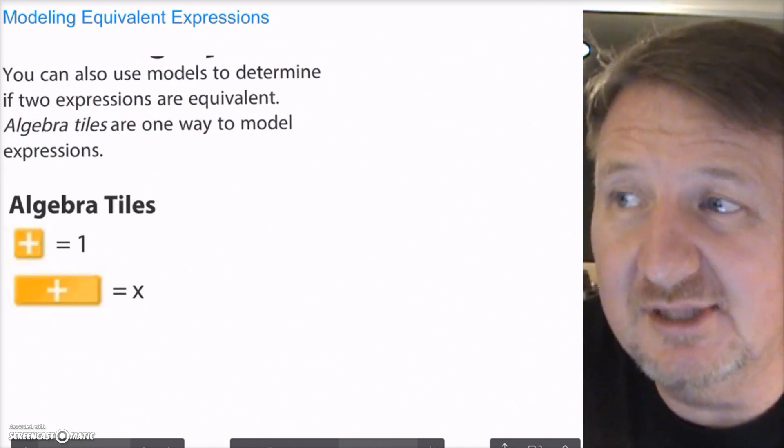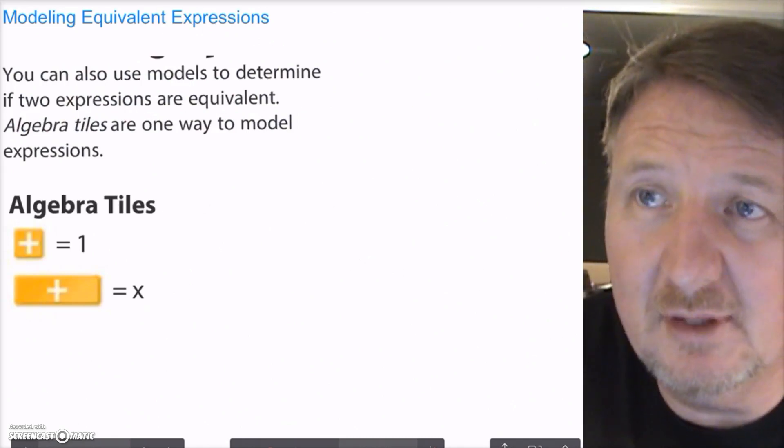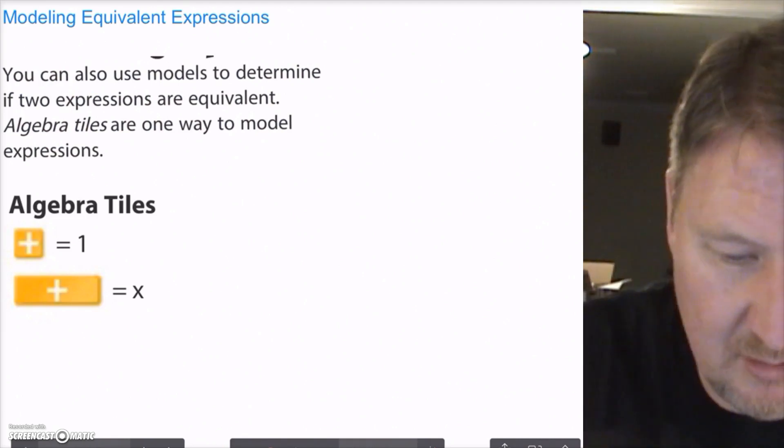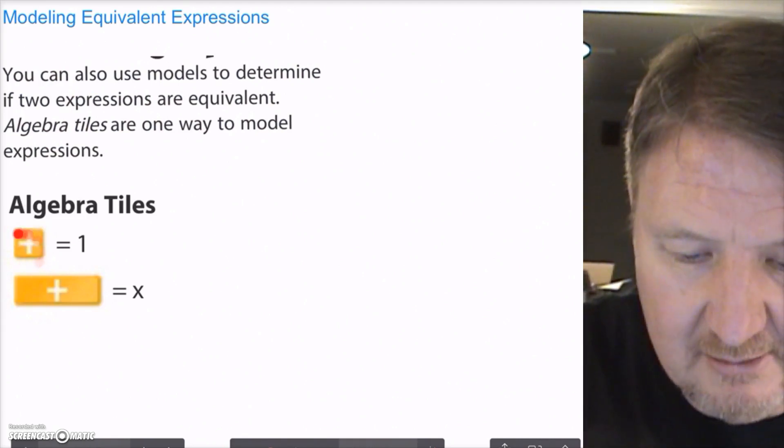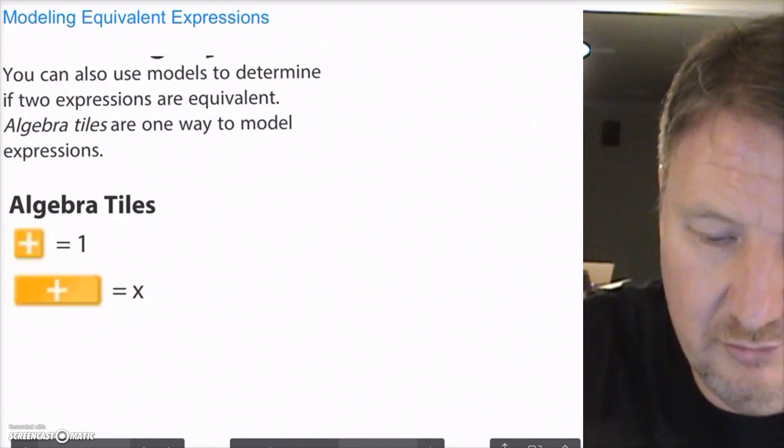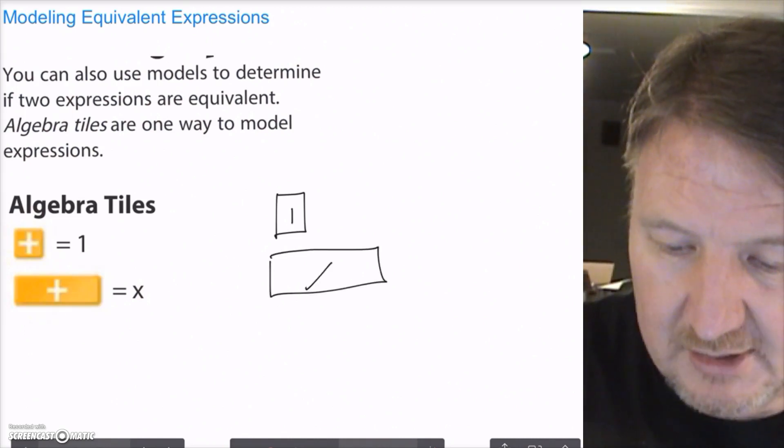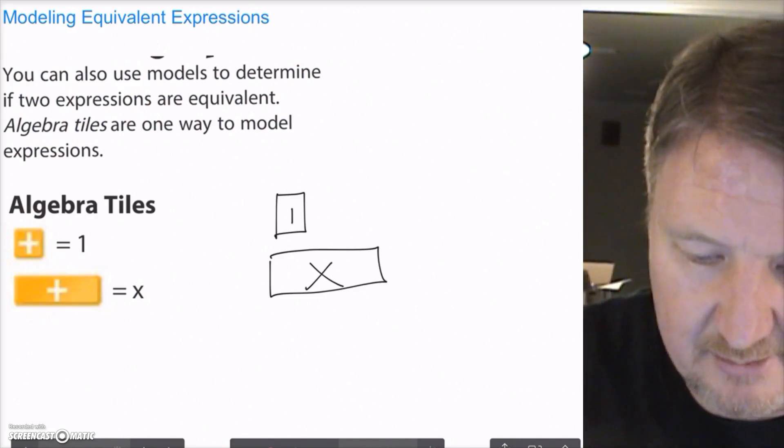Modeling equivalent expressions. Another way you can do this is use a model. It says you can use models to determine if two expressions are equivalent. Algebra tiles are one way to model the expression. So this is what I'm talking about when I say algebra tiles. I got this little guy here, he's going to equal 1. And I got this big rectangular guy here, he equals x. And how I would do this on a problem is I would just draw an x. And I would probably put a 1 in there, not an x, but draw a square rather. And then I would draw a rectangle and put an x in there.